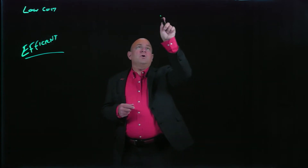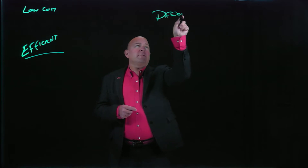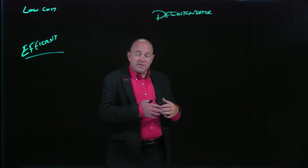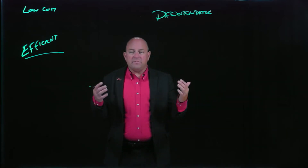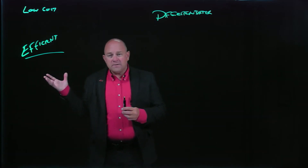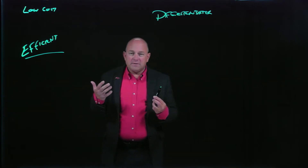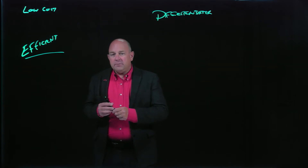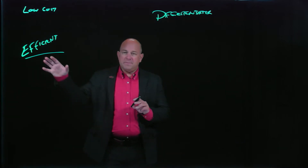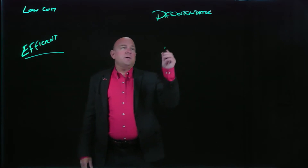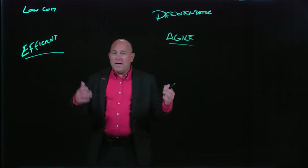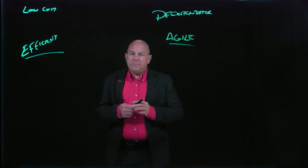A differentiator tries to create a product or service that is different from other organizations — different from the mainstream — and therefore can generate more margin; you can charge higher prices and create higher trade margins. Low-cost providers don't always differentiate based on products, but they differentiate based on their ability to drive extremely low costs and in many cases value for their customers. From a supply chain perspective, this translates into what we call an efficient supply chain strategy, or what you might think of as an agile type of supply chain strategy.